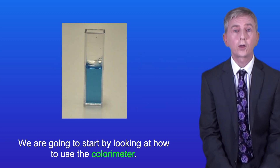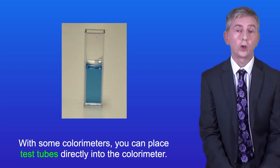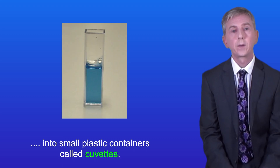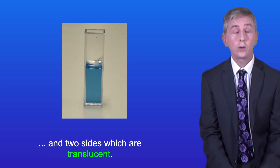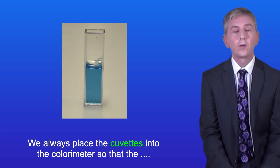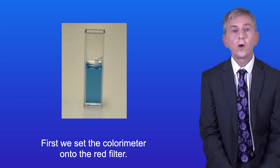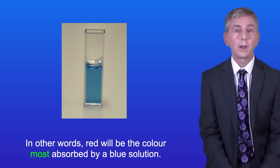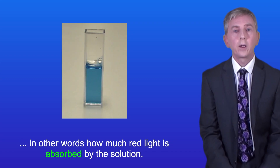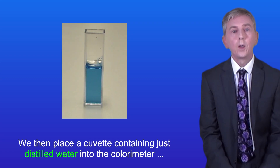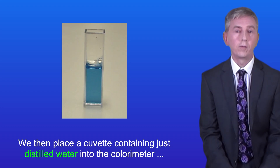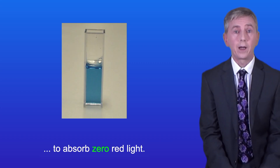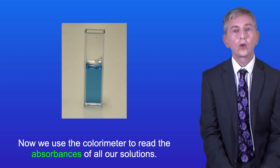Now let's look at how to use the colorimeter. With some colorimeters you can place test tubes directly into the colorimeter. However, in other colorimeters you need to transfer all of your solutions into small plastic containers called cuvettes. Cuvettes have two clear transparent sides and two sides which are translucent. We always place the cuvettes into the colorimeter so that the light passes through the transparent sides. First we set the colorimeter onto the red filter, because red is the complementary color to blue — in other words, red will be the color most absorbed by a blue solution. We then set the colorimeter to measure absorption — how much red light is absorbed by the solution. We then place a cuvette containing just distilled water into the colorimeter and set the colorimeter to zero, essentially telling the colorimeter to consider distilled water to absorb zero red light.